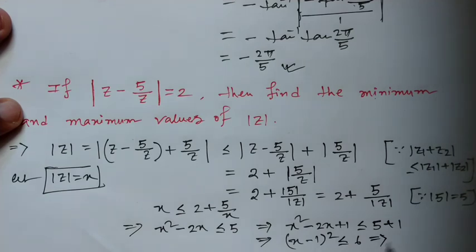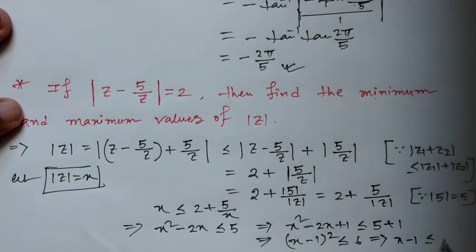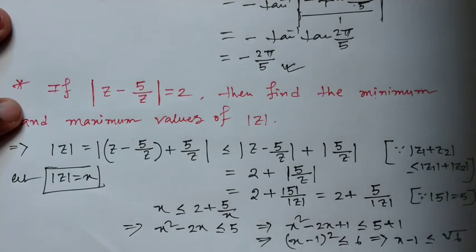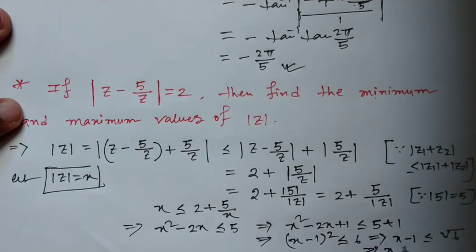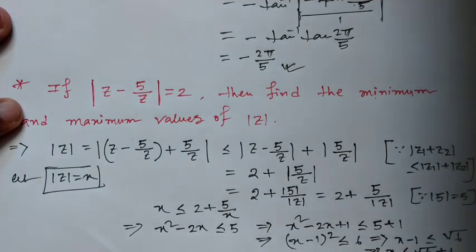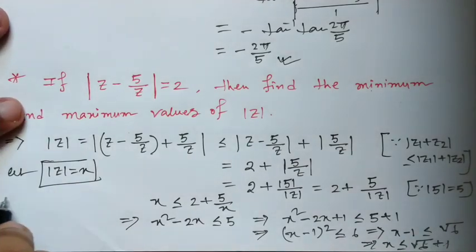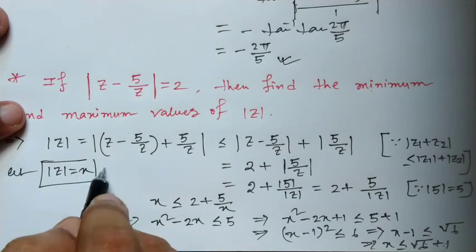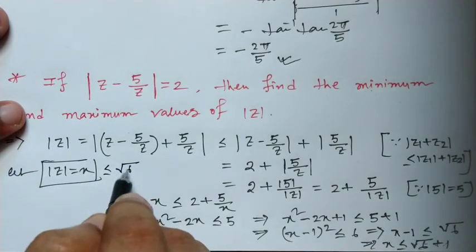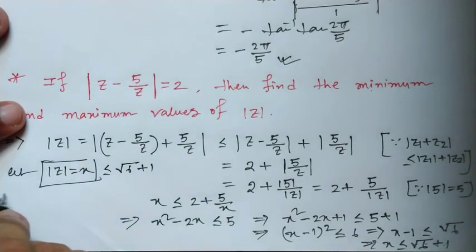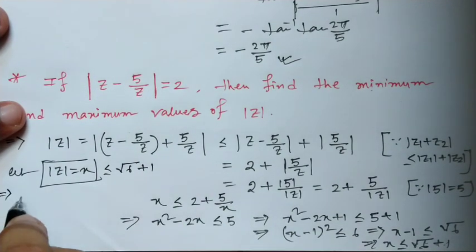This means x minus 1 is less than or equal to root 6, therefore x is less than or equal to root 6 plus 1. That is, mod z equals x is less than or equal to root 6 plus 1.